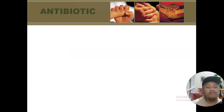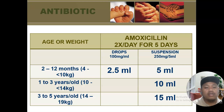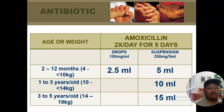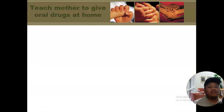For amoxicillin dosing: it is given twice a day for five days, either as drops or suspension depending on the child's age and weight. For drops, given to infants, it is 2.5 ml. For suspension, the doses are 5 ml, 10 ml, and 15 ml for the 2–12 months, 1–3 years, and 3–5 years age groups respectively. Always use the child's weight rather than age for more accurate drug calculation.